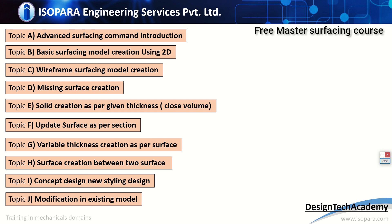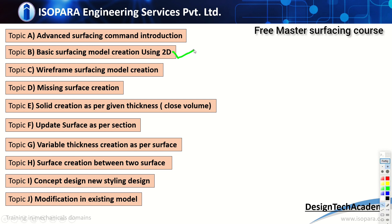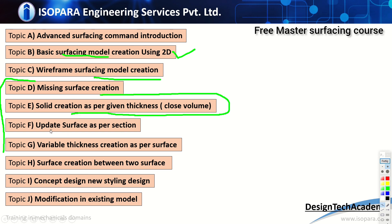These are the major topics you are going to learn in this course: advanced surfacing command introduction, where you will learn every command used in surfacing; basic surface design creation from 2D details; wireframe surfacing model creation; and major topics used in the plastic domain, automotive, or any other sector — including surface creation, missing surface creation, and solid surface creation as per thickness, which we generally know as closed surface.